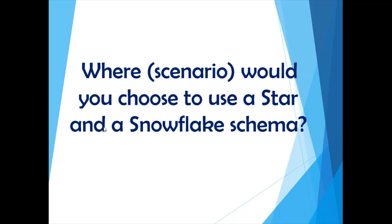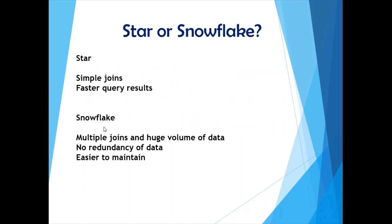Both schemas have pros and cons and should be used depending on business requirements. A star schema has simpler joins and simpler queries because all dimension tables are directly linked to the fact table — you make a single join and get your data, so queries are faster. A snowflake schema has more complex queries because you need to link through multiple tables, but it is more appropriate when you have a huge volume of data.